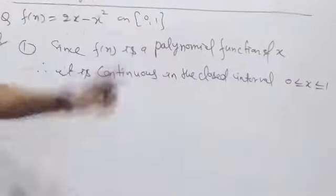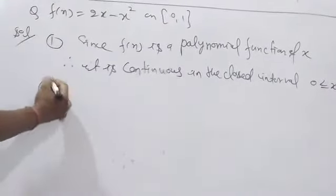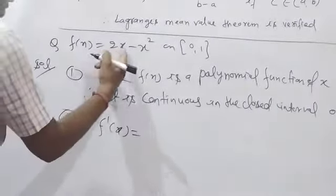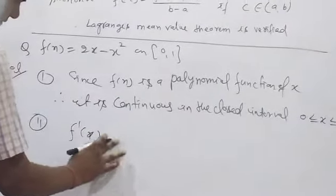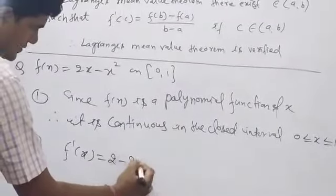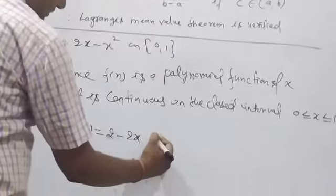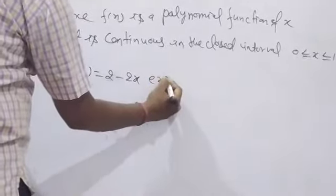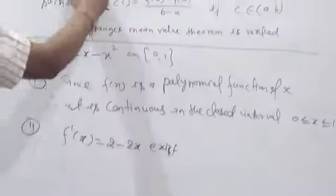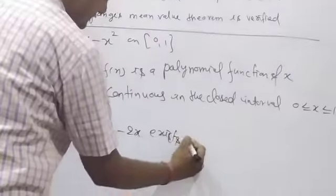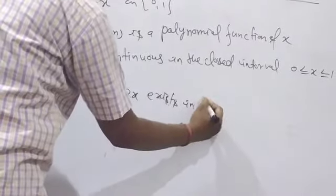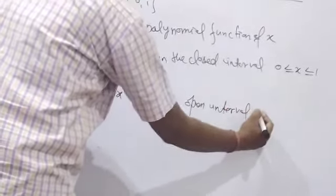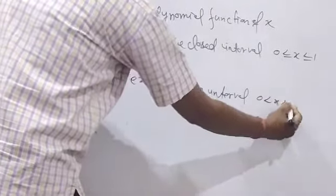In the closed interval [0, 1] — this is the first point. Second point: f'(x) = 2 − 2x, so f'(x) exists in the open interval 0 < x < 1.